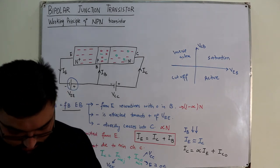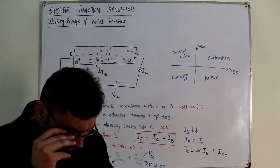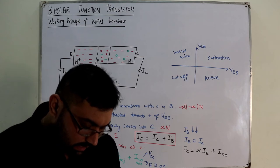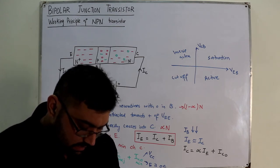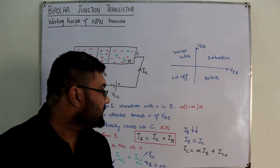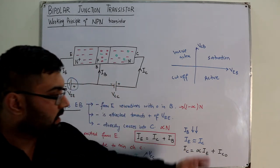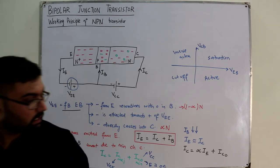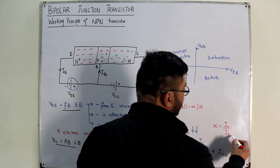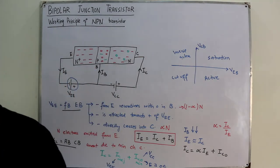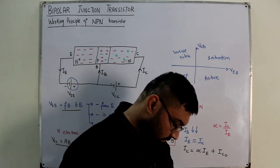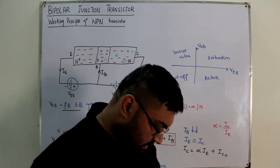Most electrons from the emitter go to the collector. IC = α·IE, where α is the forward current gain — it tells you what fraction of the emitter current becomes the collector current. If we neglect ICO, then α = IC / IE. We also have another parameter beta (β), where β = IC / IB, which is the DC current gain. Beta is also known as the hybrid parameter hFE, which will be covered in upcoming chapters.